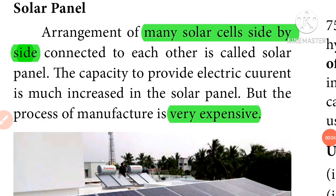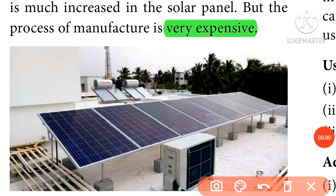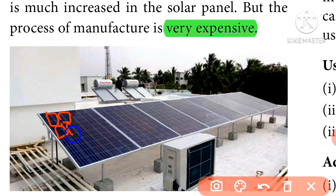An arrangement of many solar cells placed side-by-side and connected to each other is called a solar panel. This increases the capacity to provide electric current significantly.